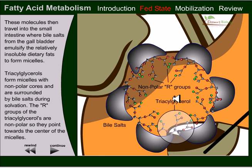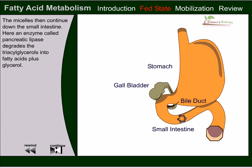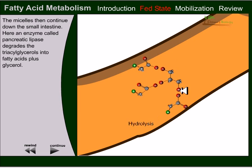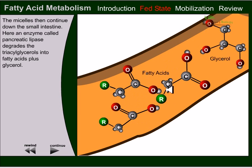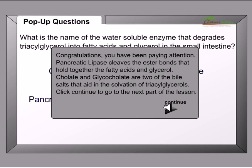The R groups are at the center and triacylglycerols are placed there. The micelles then continue down the small intestine, where an enzyme called pancreatic lipase digests the triacylglycerol into fatty acids plus glycerol via enzyme hydrolysis. Question: What is the name of the water-soluble enzyme that degrades triacylglycerol and produces fatty acid and glycerol in the small intestine? The answer is pancreatic lipase.